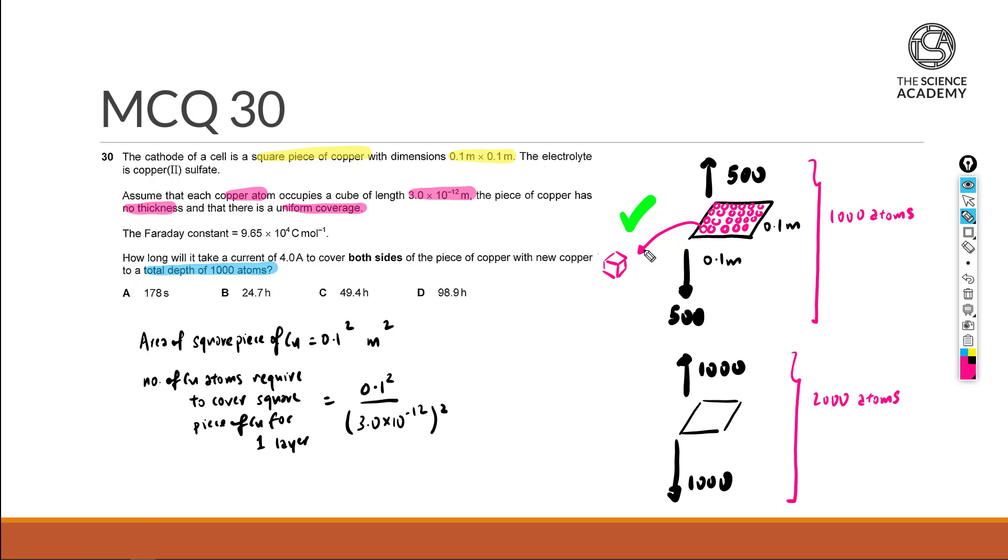And it does come with a cubic length of 3×10^-12 meter. I'm only interested in the surface area so I don't need to cube this to find the volume of this copper atom. Because we are assuming that there's relatively no thickness to be considered.